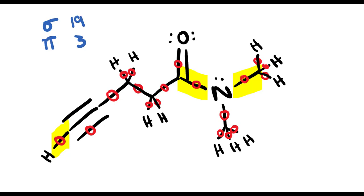Now let's determine the orbital overlap for each bond. Remember, you need a strong understanding of hybridization to understand the orbital overlap for sigma bonds, so make sure you've watched that video. We'll start with the first bond, which is a single bond — single bonds are made up of only sigma overlap. The hydrogen is s-hybridized, and this carbon is sp-hybridized. So it is going to be s to sp overlap.